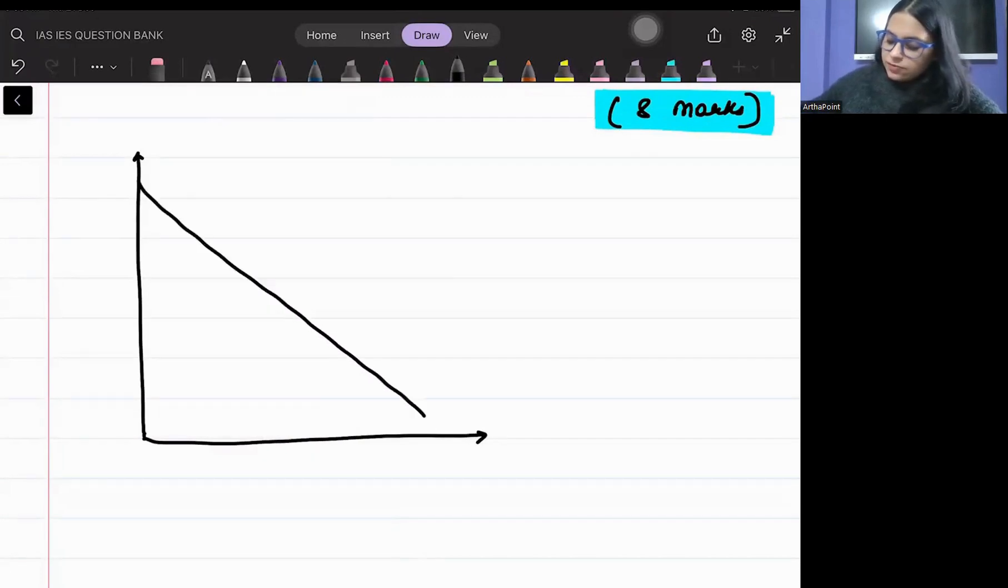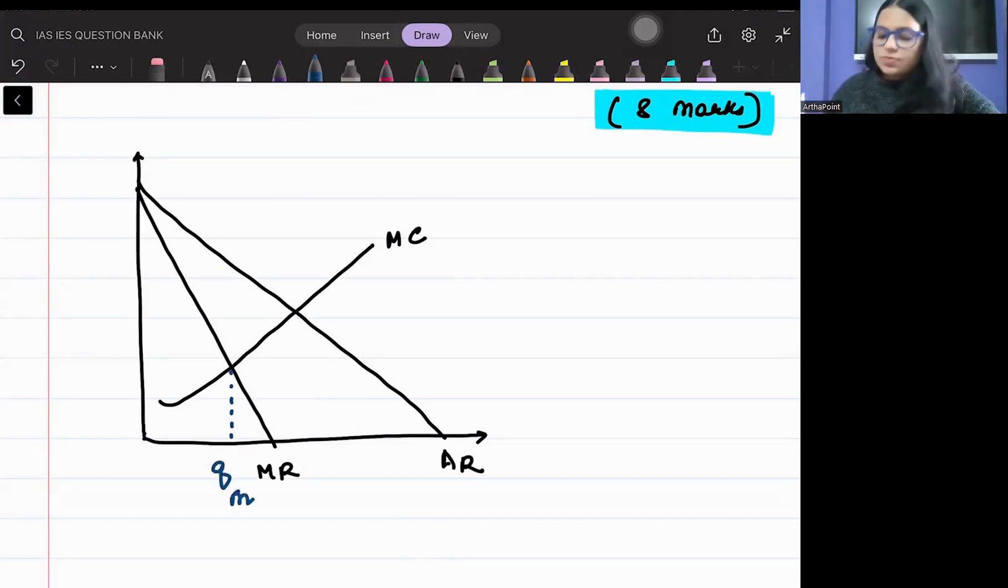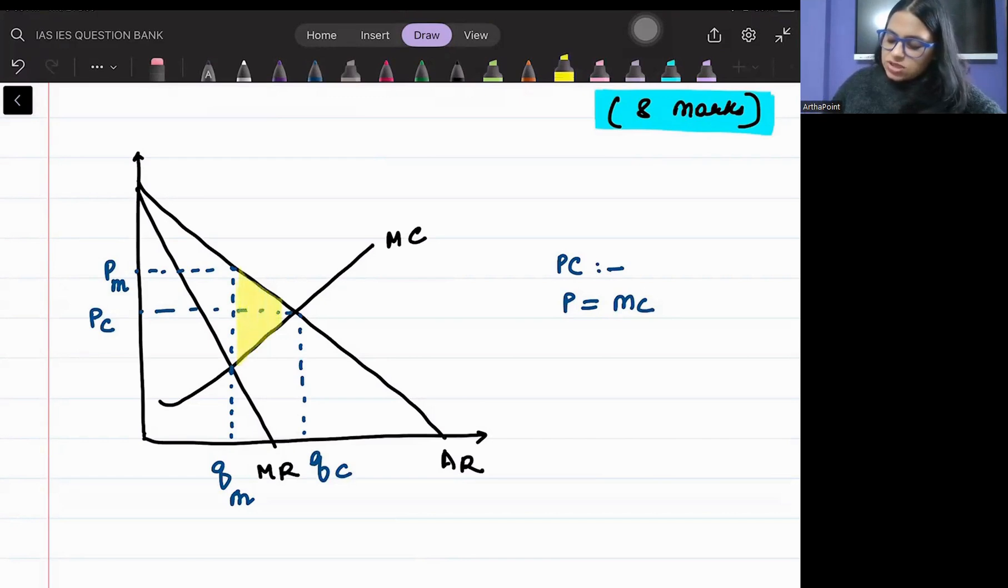So I will have a demand curve which is my AR curve, this will be my MR curve, I will have an MC curve. Where MR and MC will meet, that is my quantity of a monopolist. I will take this quantity to the price and calculate price of a monopolist. Then for perfect competition, what we will do - he sets price equal to MC. So perfect competition ka jo price hoga wo ye ho jaega PC, and perfect competition ka jo quantity hoga wo QC ho jaega. This area that we create here is my deadweight loss.